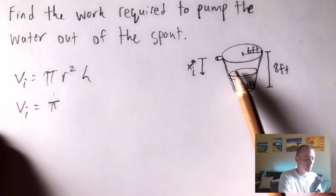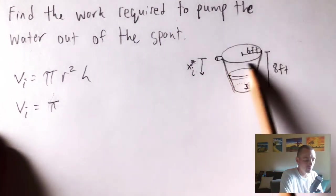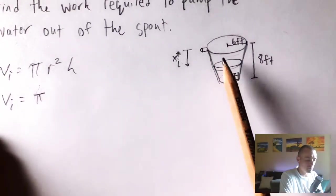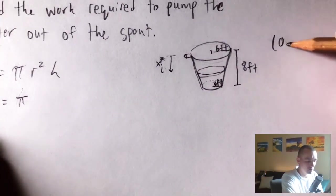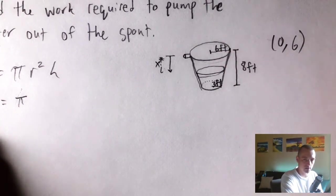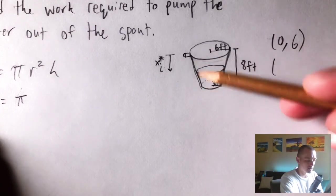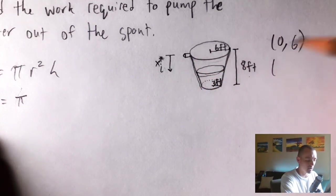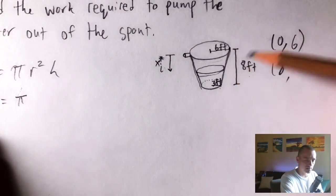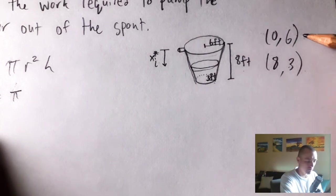The method that we use is to basically come up with two points that would sit on this linear function. The first point we can say would just be when xi star is zero. When we're at the top of our tank, this top layer here, our xi star would be zero, and the radius at that point is six feet. So we'll say it goes through the point zero six. And then when our xi star gets down to the bottom of this tank, when xi star is eight, the radius of that disk is three, three feet. So basically we need a linear function that goes through these two points.